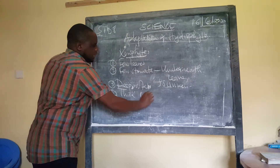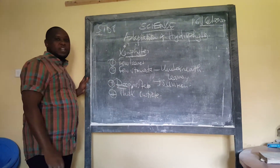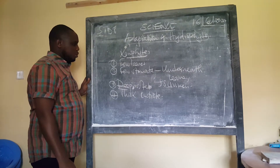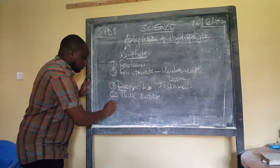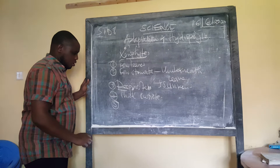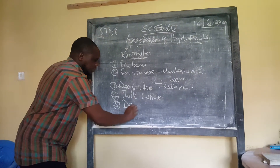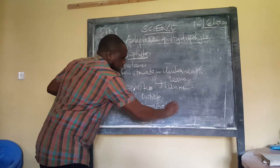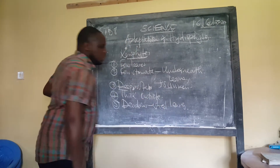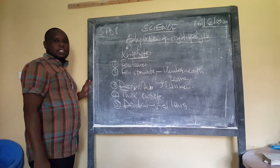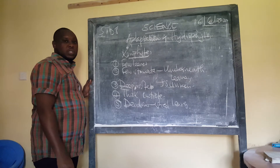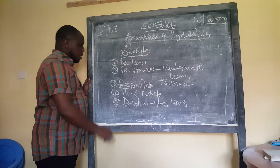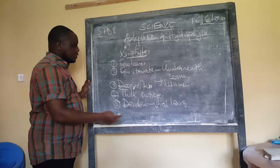We also talked about thick cuticle — a coating on the leaf that prevents transpiration and the loss of water available in the plant. Then of course we talked about being deciduous. Deciduous means the plant is able to shed leaves during the dry season so that it does not lose a lot of water when water is not available.